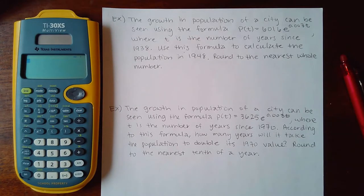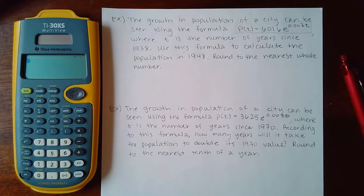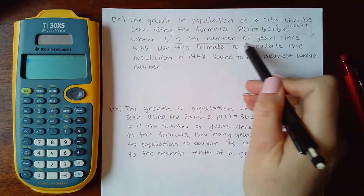Okay, now we're finally in the last three problems of section 4.5. The first one says the growth in population of a city can be seen using this formula here where t is the number of years since 1938.